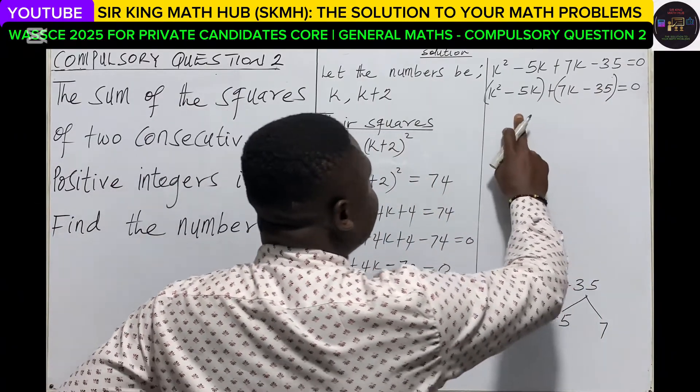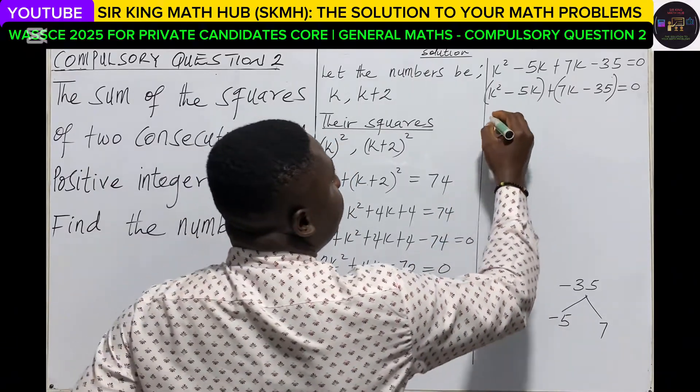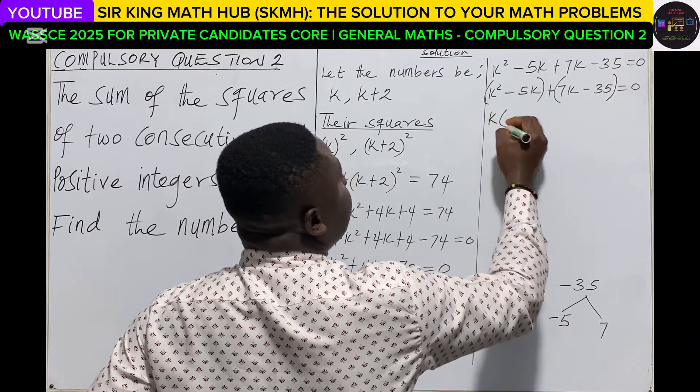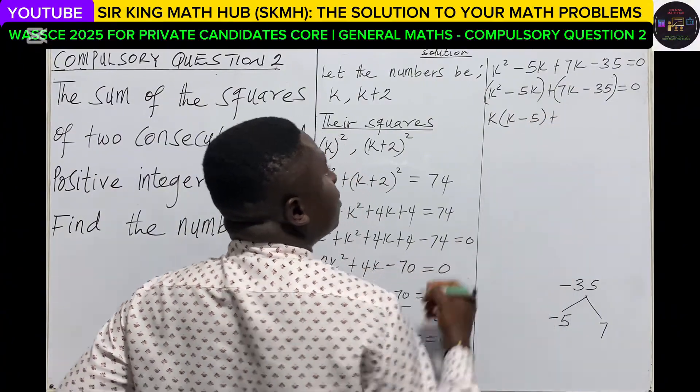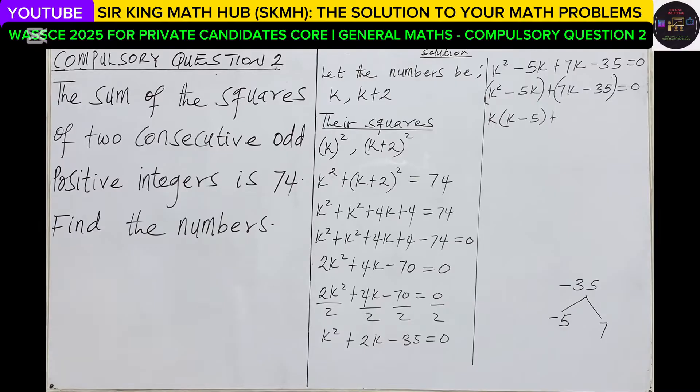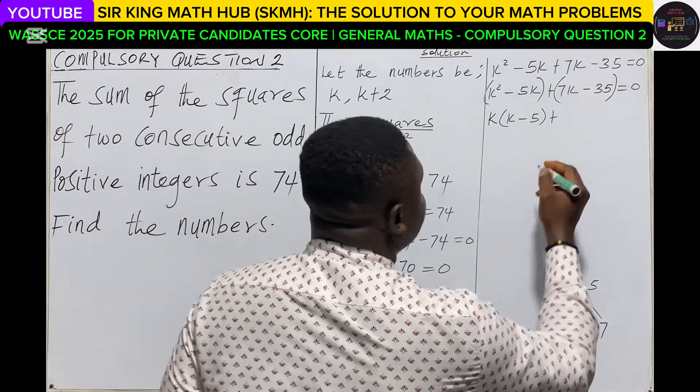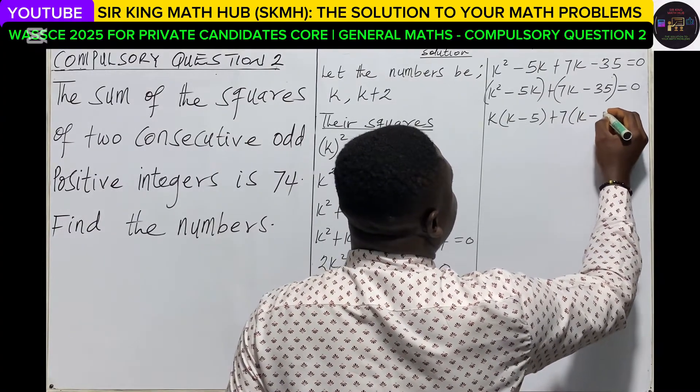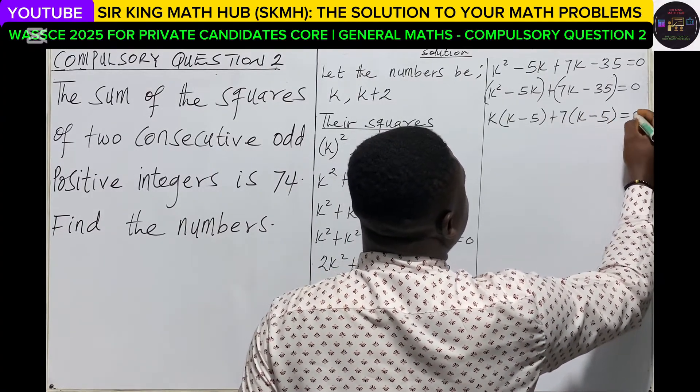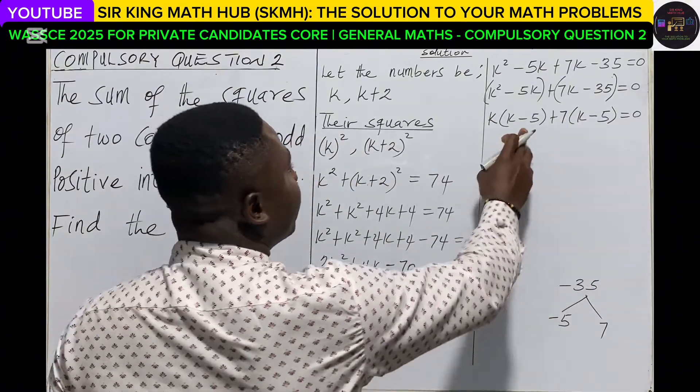So for the first group, what is the common factor? Common factor is k, so let's factorize k out leaving k minus 5. Also for the second bracket, what is the common factor? Common factor is 7, leaving k minus 5, so everything is equal to 0.